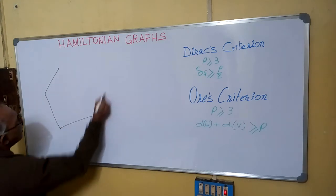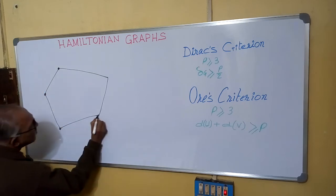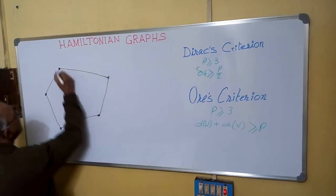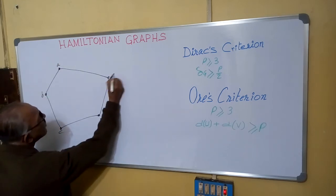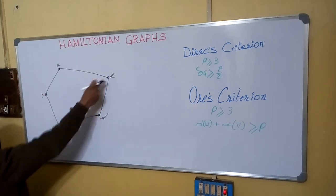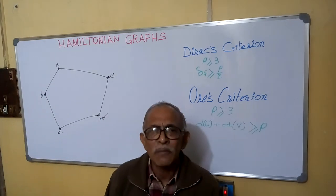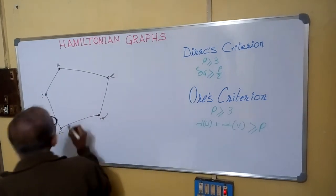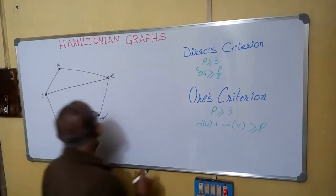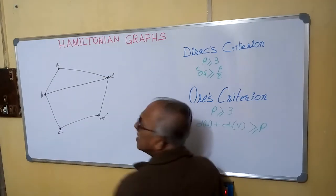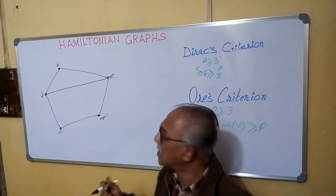Suppose we are making this graph. In this graph there is a cycle containing all the vertices of the graph, hence it is a Hamiltonian graph. Now if we are adding an edge, we still see there is a cycle A-B-C-D-E. In this cycle all the vertices are there, hence it is a Hamiltonian graph.